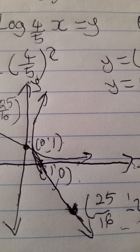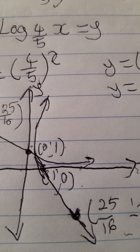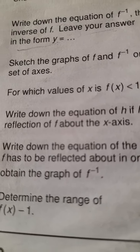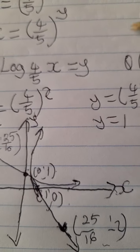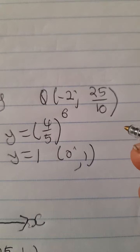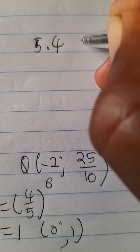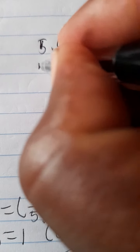At 5.4, they ask for which values of x is f(x) less than 1. Looking at the graph, f(x) equals 1 when x equals zero, and the function decreases as x increases beyond zero. So the x-values where f(x) is less than 1 are where x is greater than zero. Therefore, the solution for 5.4 is x greater than zero.